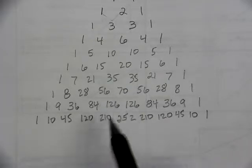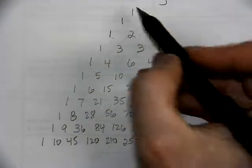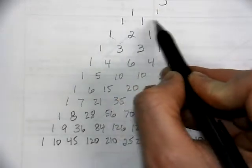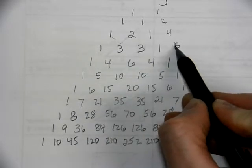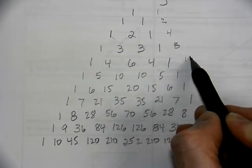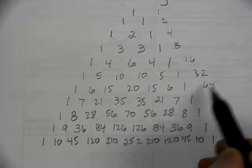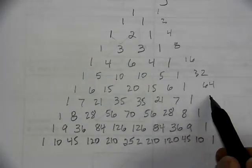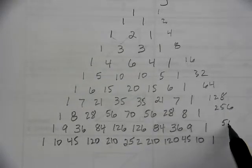There's now no need to do the formula of 8 factorial over (8 minus 4) factorial times 4 factorial to figure that all out. Also, a good pattern to recognize is the sum of this row is 1, the sum of that row is 2, this row is 4, this row is 8, 16, 32, 64. You see the pattern — how it's doubling? This one adds up to 128, 256, 512, and 1,024.